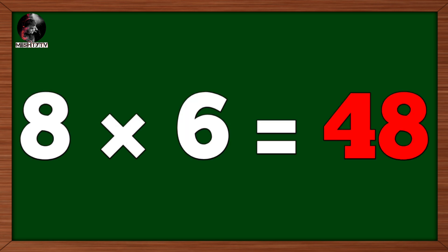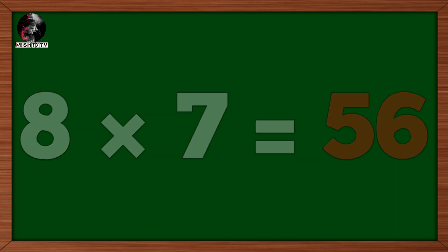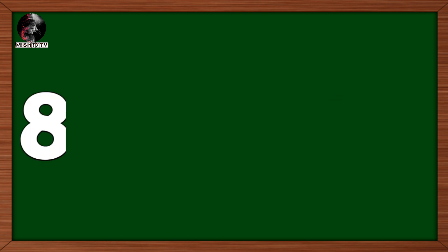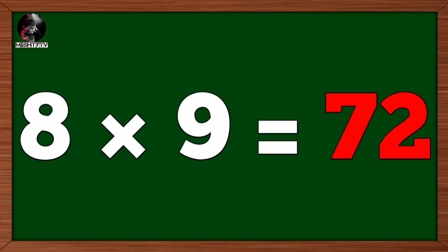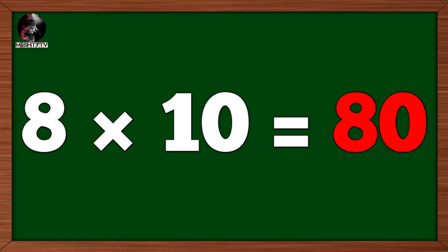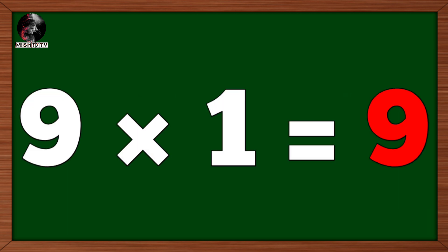Eight six's are forty-eight. Eight seven's are fifty-six. Eight eight's are sixty-four. Eight nine's are seventy-two. Eight ten's are eighty. Table of nine. Nine one's are nine.